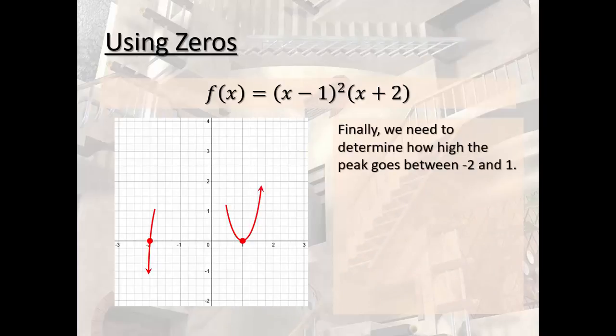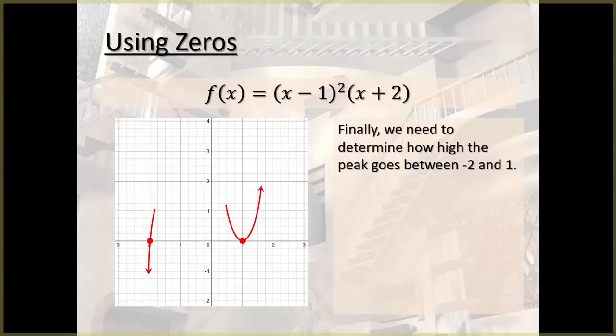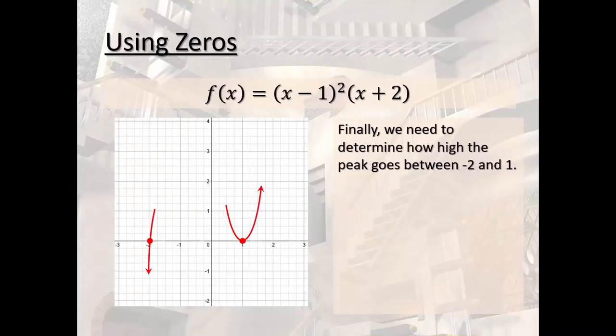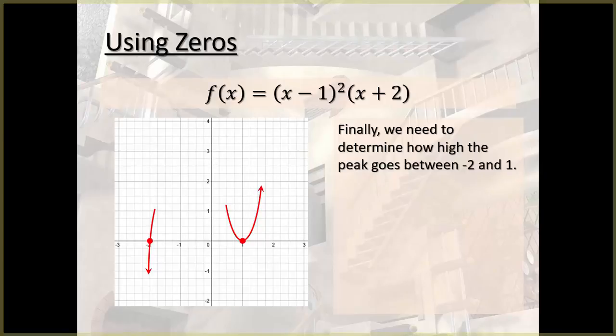The only thing that I'd like to do at this point is try to figure out how high does that peak go? Does it go right there? Does it go here, here? We need to find out about where it is. So I might plot a couple of points between there. Try to make it a little bit easy on yourself. Plug in negative 1, plug in 0, and that should be enough to give us a good picture.